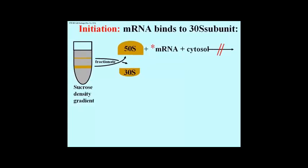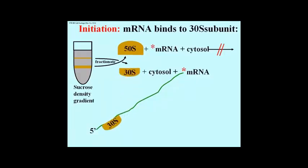One can do simple experiments: add a messenger RNA, perhaps one that's been made radioactive so you can track it, and add cytosol from E. coli cells and ask if there is an association — and it turns out there isn't one. On the other hand, if you add the 30S subunit, the small subunit, to a radioactive mRNA with cytosol present, presumably to provide some necessary factors, sure enough, the 30S subunit can be shown to associate with the mRNA.